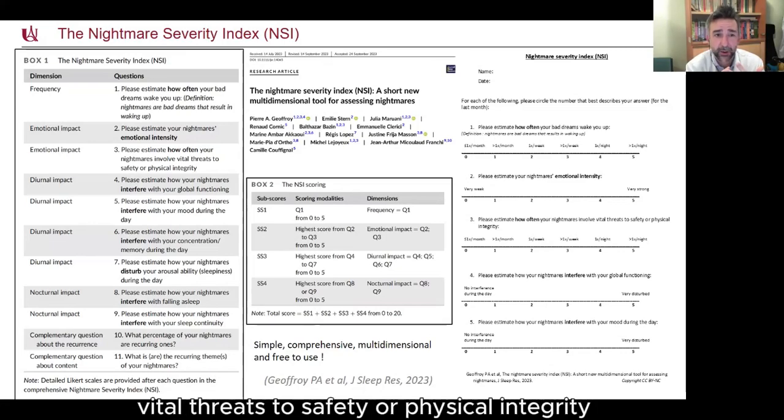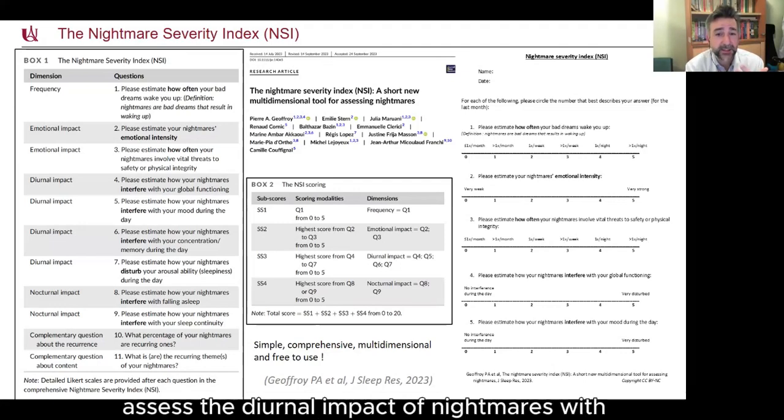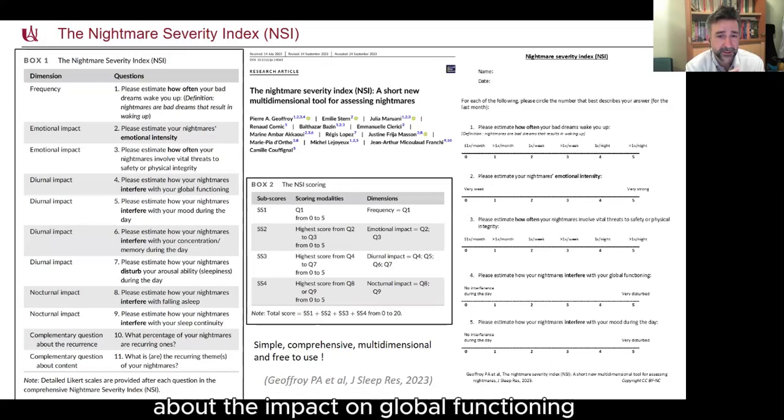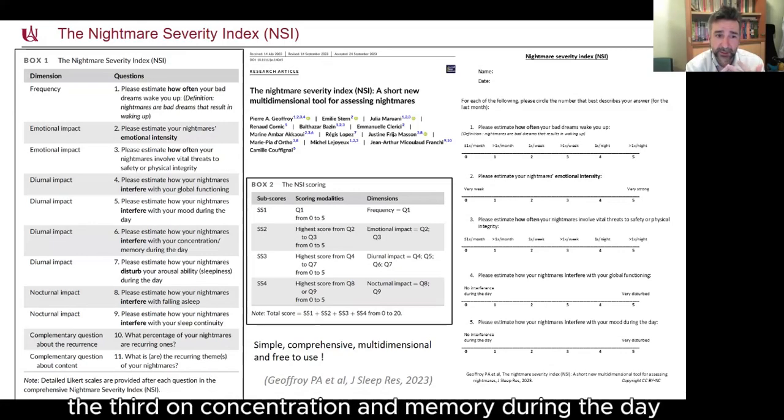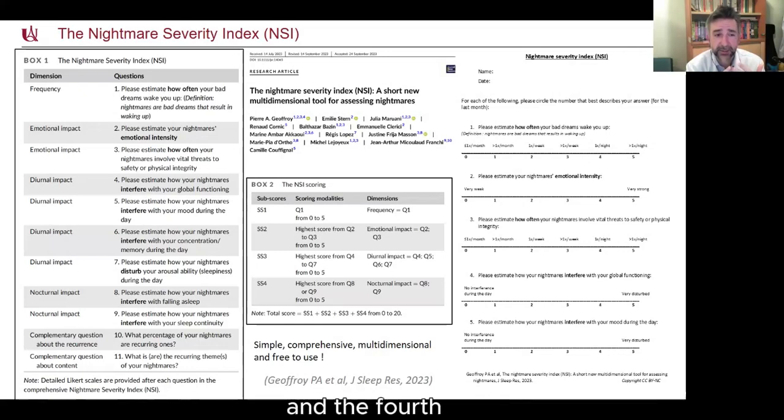The third subscore assesses the internal impact of nightmares with four questions. The first one about the impact on global functioning, the second one on mood, the third on concentration and memory during the day, and the fourth about the arousal ability.